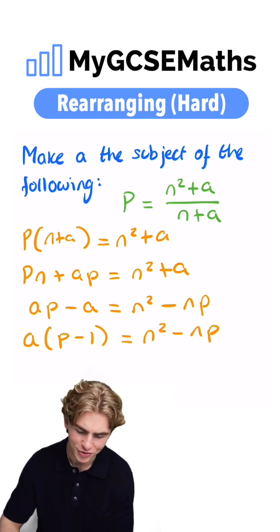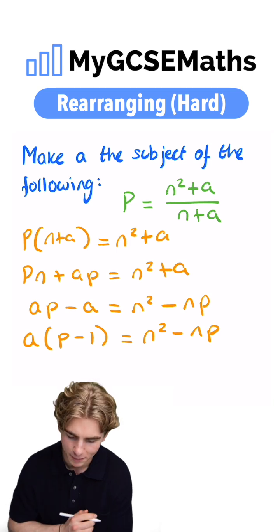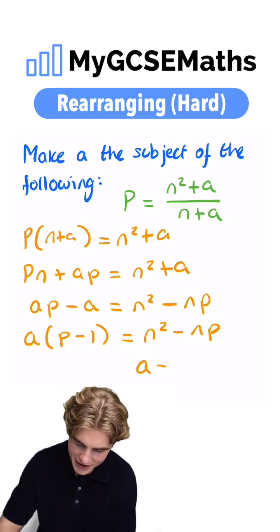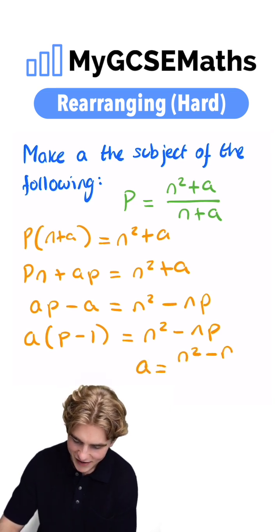Up next, finally, to get the A on its own, we can divide both sides by P minus 1. We're going to end up with A equals N squared minus NP over P minus 1.